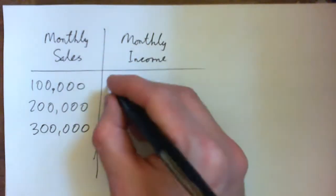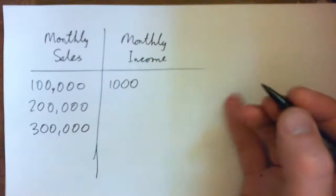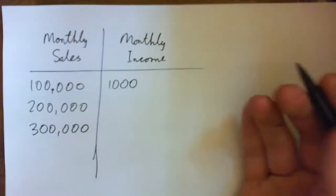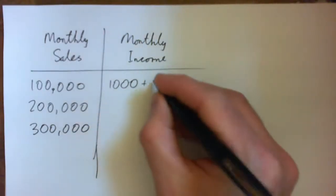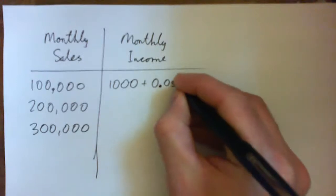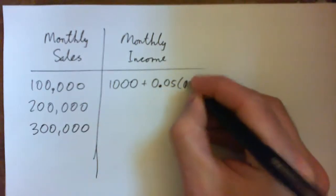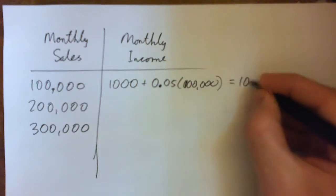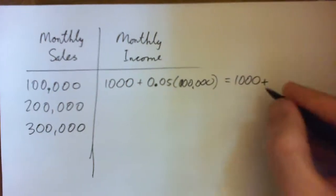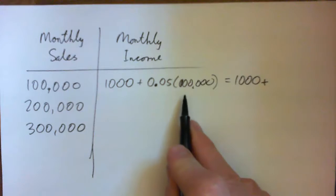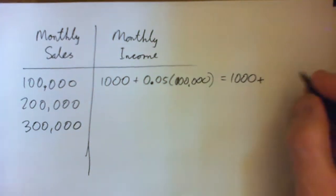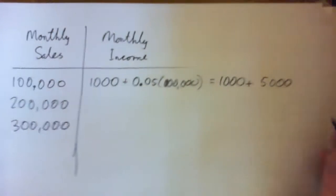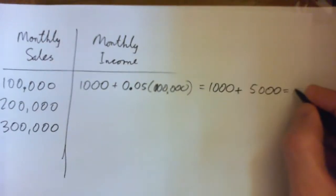So he would get $1,000 no matter what, just for showing up to work every day. But then 5%, which is 0.05, times $100,000. So he gets the $1,000 plus 5% of that is $5,000. In the first month you get $6,000.